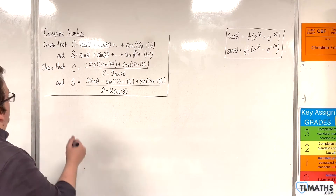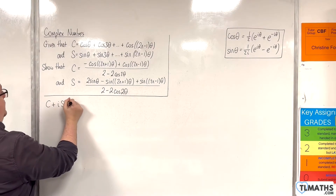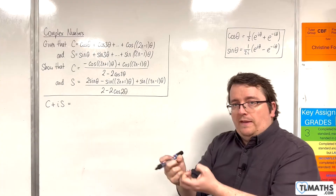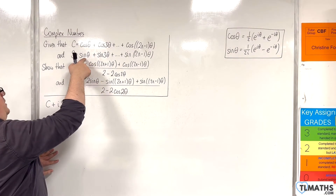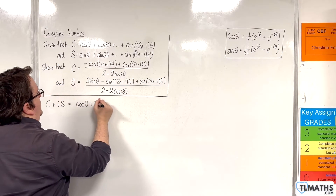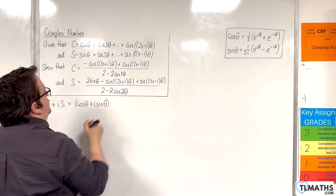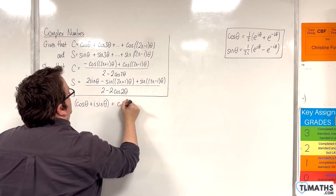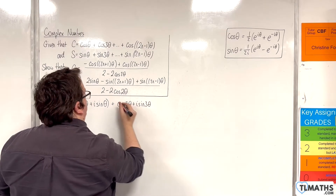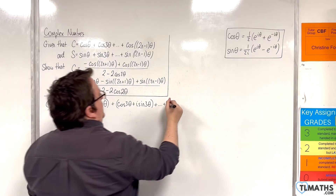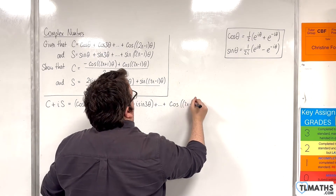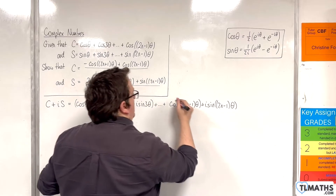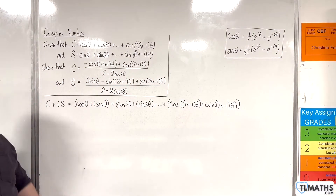The way we start this question is using C + iS. We group C and S together: (cosθ + i sinθ) + (cos3θ + i sin3θ) + … + (cos(2n−1)θ + i sin(2n−1)θ). That last term is our nth term.